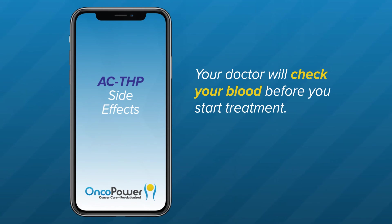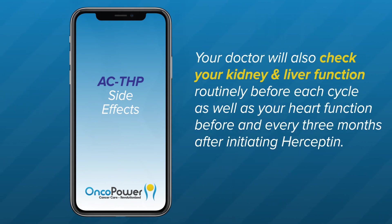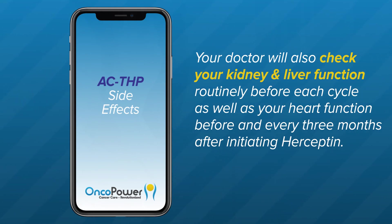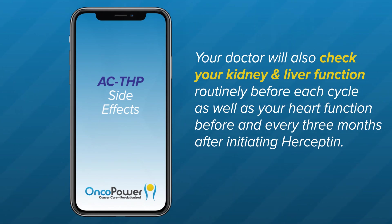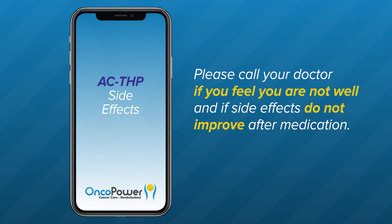Your doctor will check your blood before you start treatment. If your blood count is low, your treatment may be delayed. Your doctor will also check your kidney and liver functions routinely before each cycle, as well as your heart functions before and every three months after initiating Herceptin treatment. Please call your doctor if you feel unwell or if side effects do not improve after prescribed medications.